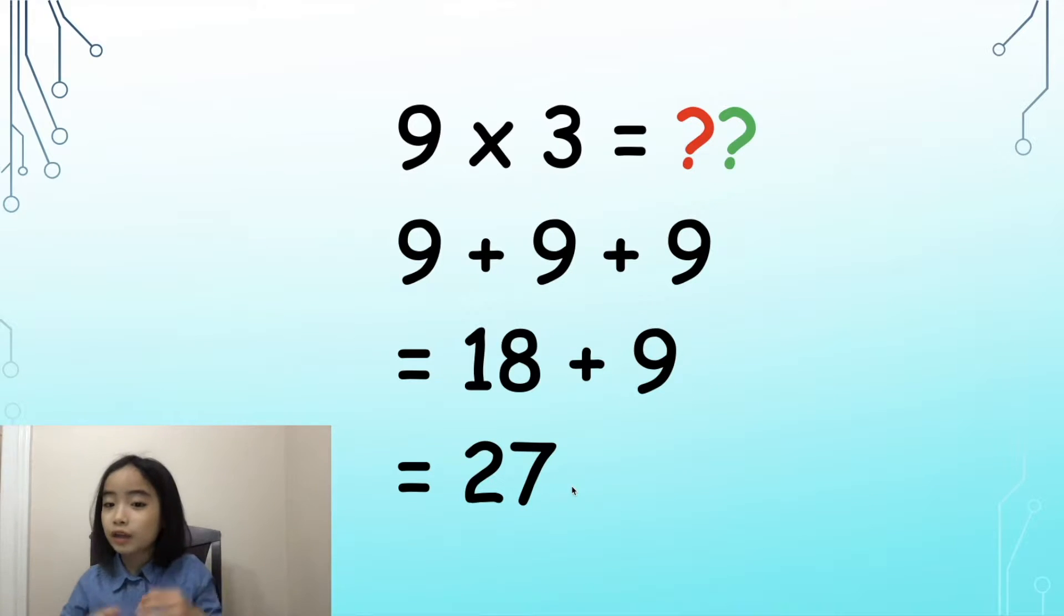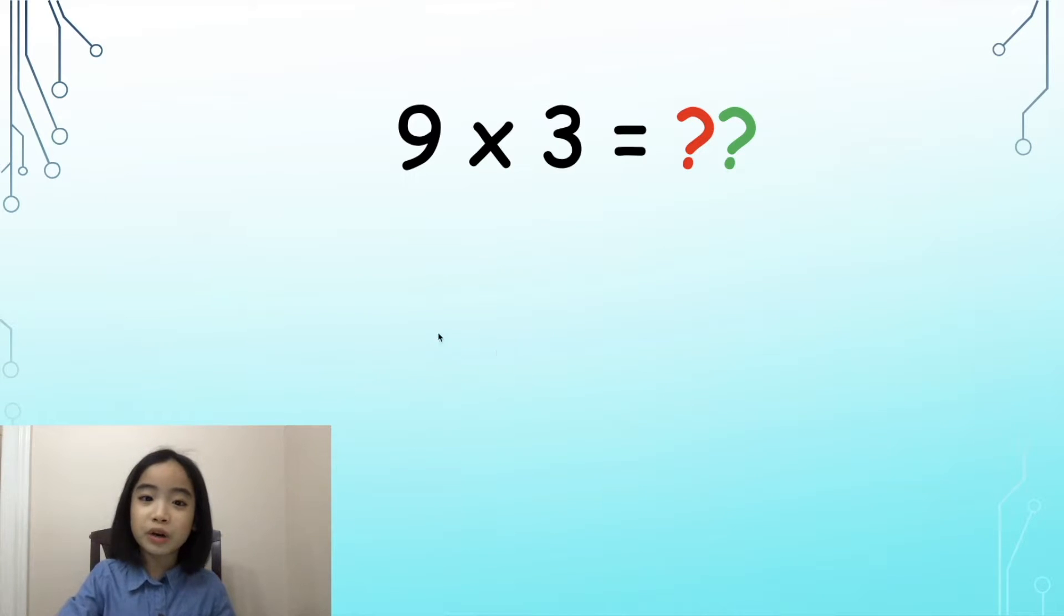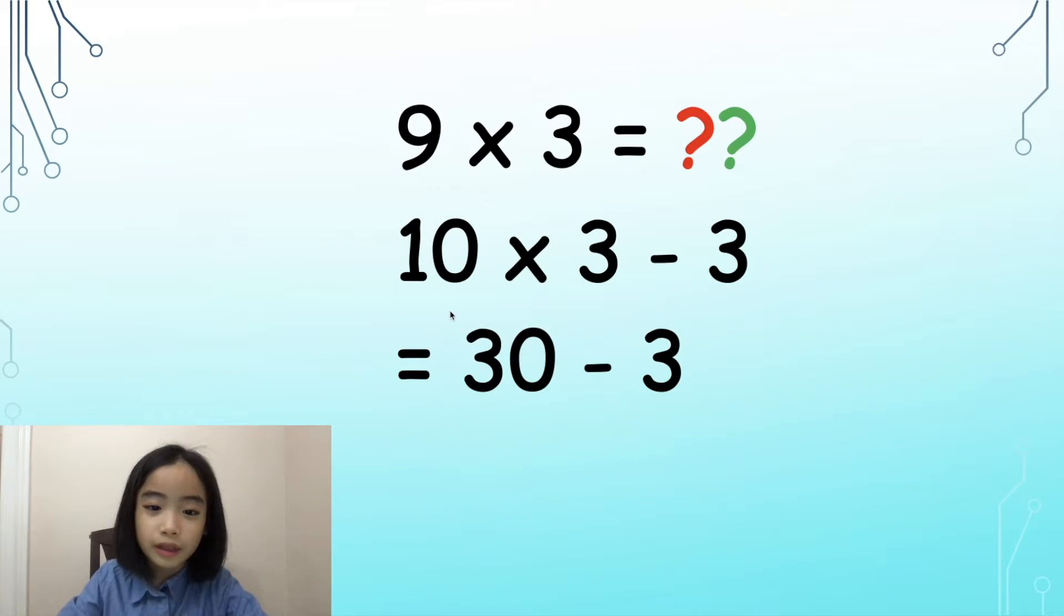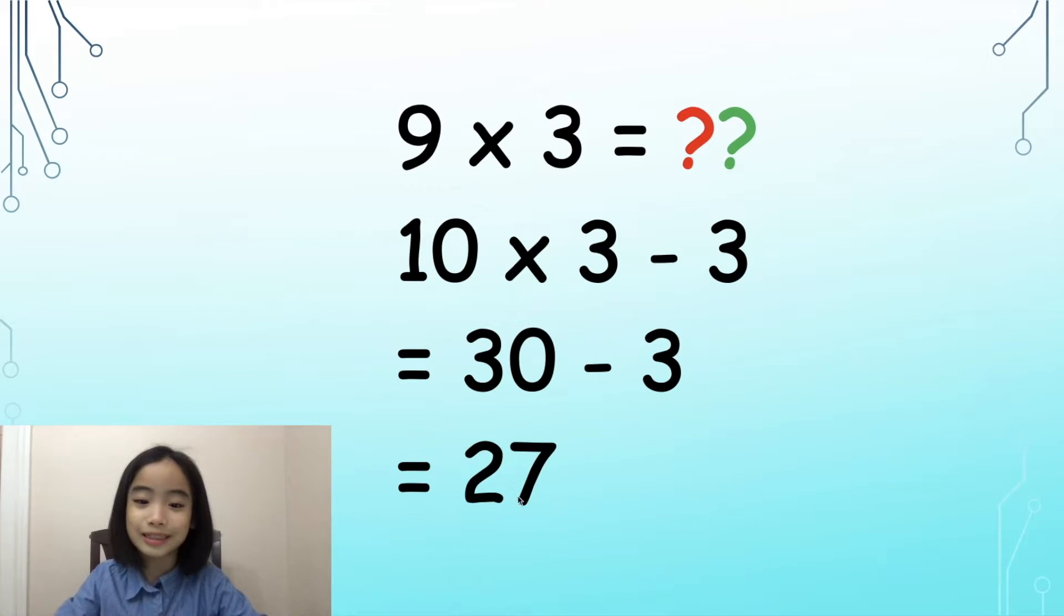But this takes a lot of time to calculate. Is there a faster way? Well, 9 times 3 is the same thing as 10 times 3 minus 3 equals 30 minus 3 equals 27. This is faster than before but still slow.